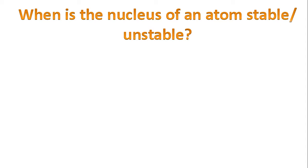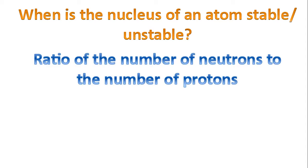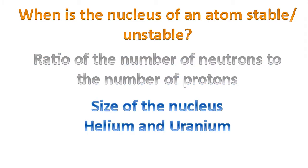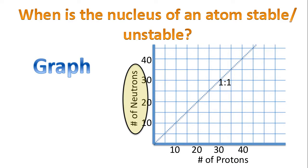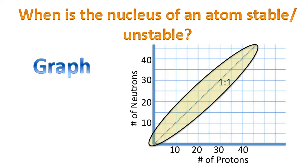So when is the nucleus of an atom stable or unstable? There are two factors to consider: the ratio of the number of neutrons to the number of protons, and the size of the nucleus — helium, which is small, compared to uranium, which is much larger. We're going to use this graph to think about this question. On the x-axis we have the number of protons, and on the y-axis the number of neutrons. I've plotted a line there which represents a 1-to-1 ratio of neutrons to protons.